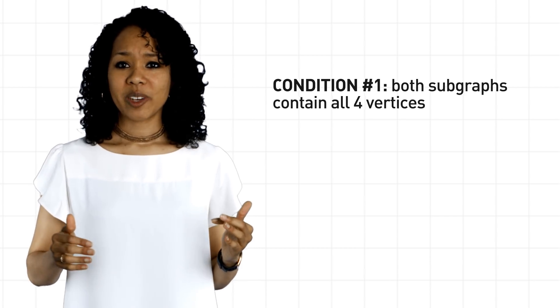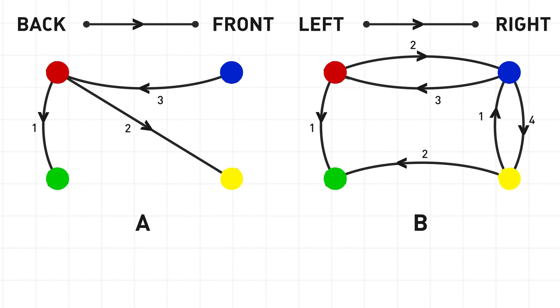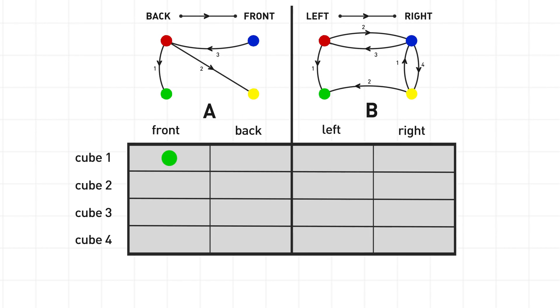Okay, great. So here are two subgraphs with four vertices, and I've arbitrarily directed the edges. Does this count as a solution? Well, A tells us to stack cube number one so that its front face is green and back faces red. And cube number two with yellow in front and red in back. The third cube with red in front and blue in the back. And the fourth cube? Well, we don't know. A doesn't contain an edge labeled four, so we don't have enough information.